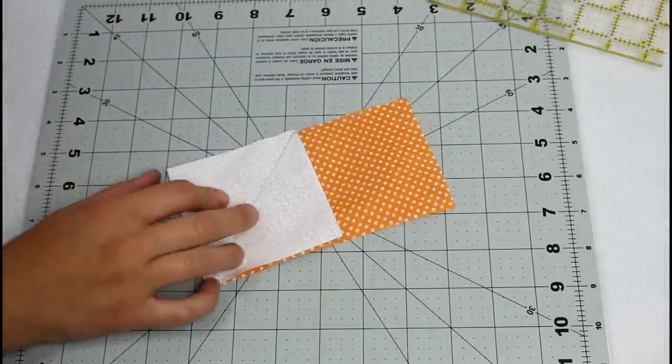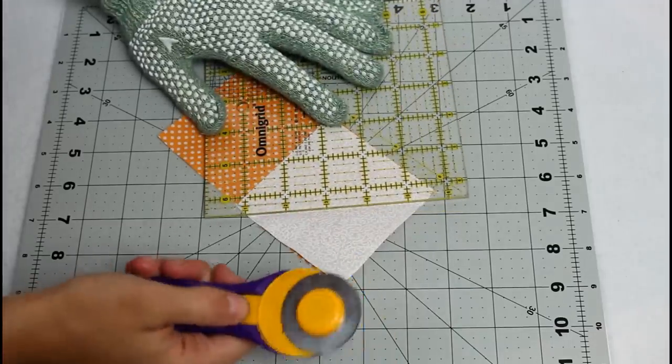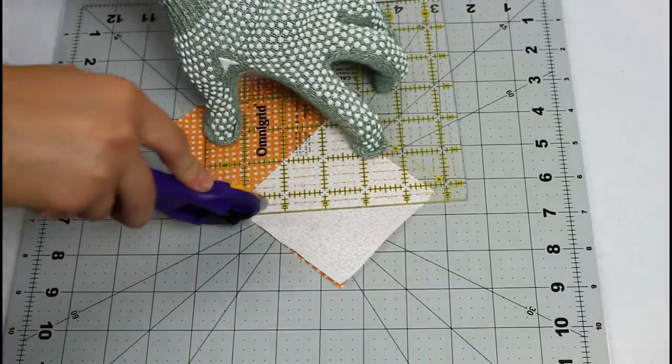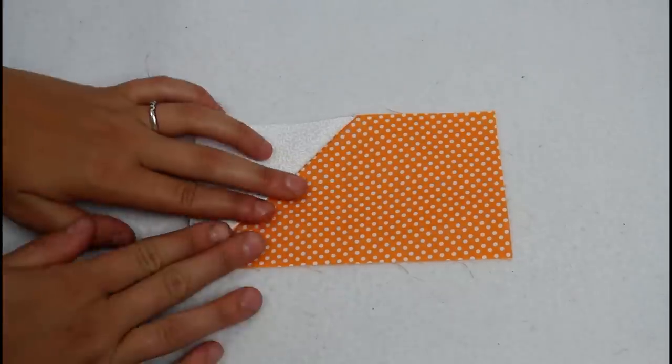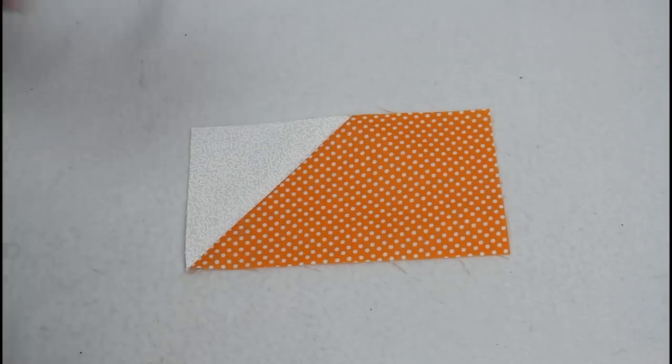By the way, the supplies I'm using really help this process go smoothly and you can find an Amazon link where I have all the supplies listed out in the description box below. After trimming each rectangle give them a nice press.